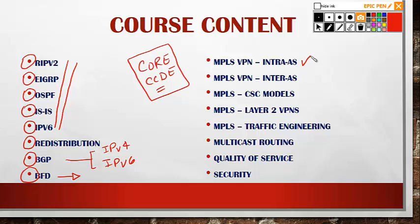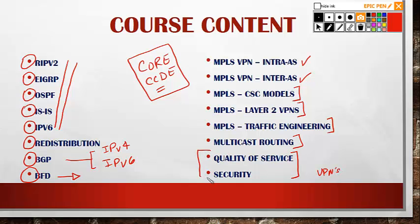We'll take a look at intra-AS MPLS VPN, inter-AS MPLS VPN, the carrier-supporting carrier models, different types of layer 2 models with AToM, VPLS, L2TP v3, everything. We'll take a look at traffic engineering, multicast routing. We'll also do quality of service as well as security — security will take a look at the different types of VPNs and their characteristics. These two topics, because they're not in the CCIE Service Provider or in the CCDE, we'll talk about from the design perspective only. Everything else is actually implemented in terms of both design and configuration.